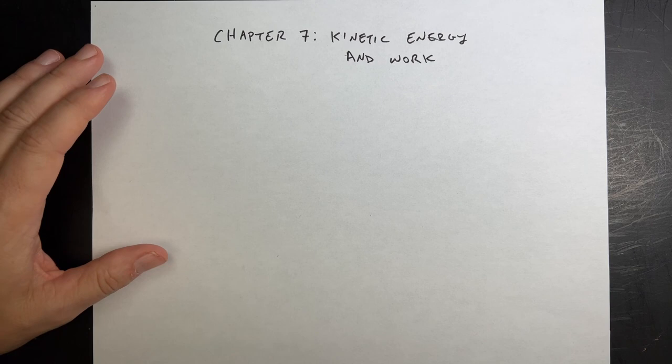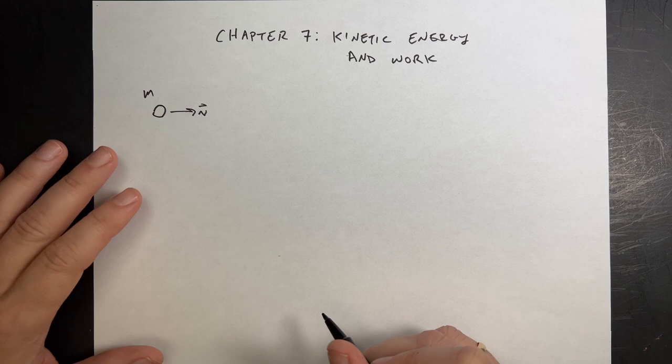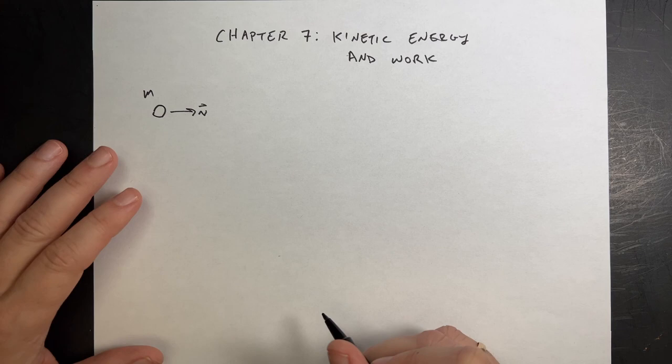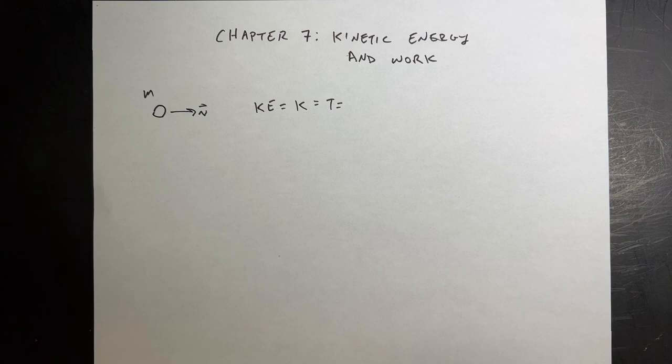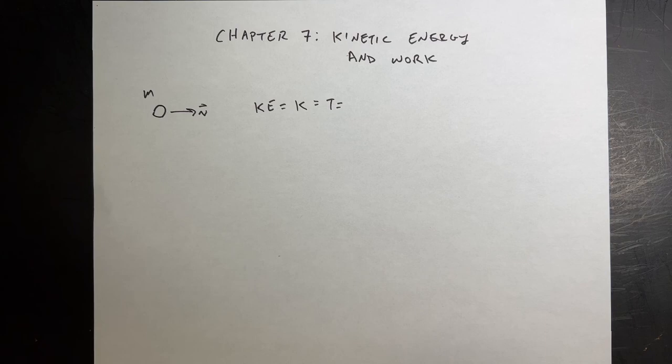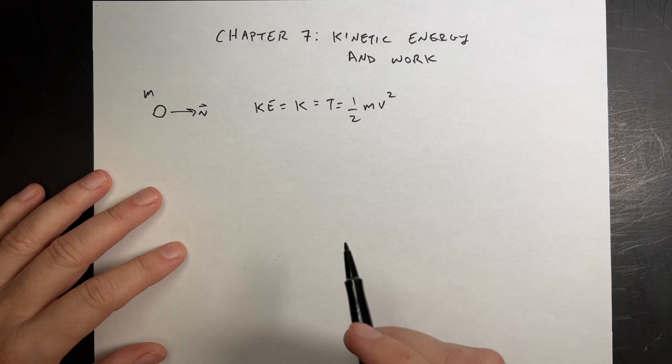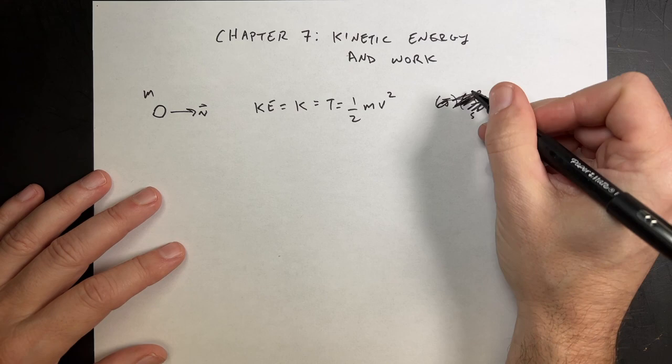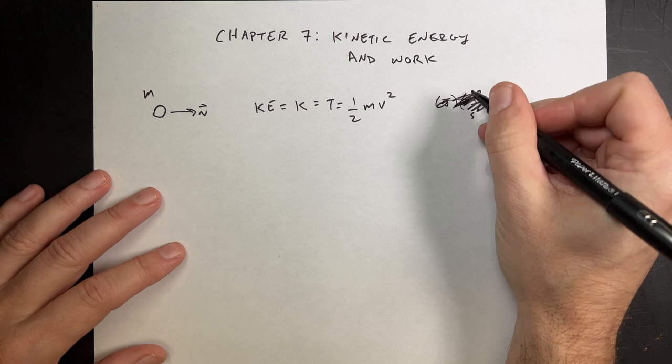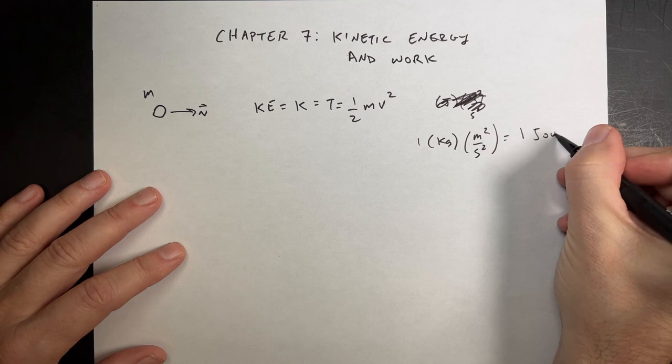If I have a ball moving with some velocity V and it has a mass M, we can associate an energy with its motion called kinetic energy. A lot of times people write it as KE, sometimes as K, and in classical mechanics as T. We calculate it as one half M V squared. The units are kilograms times meters squared per second squared, which equals one joule — a joule is a unit of energy.